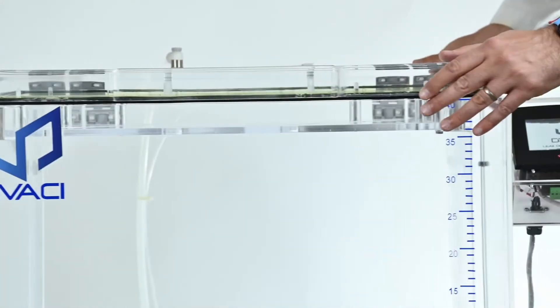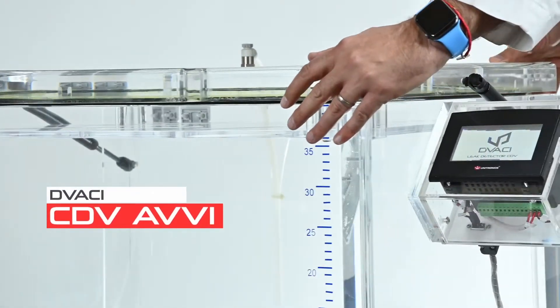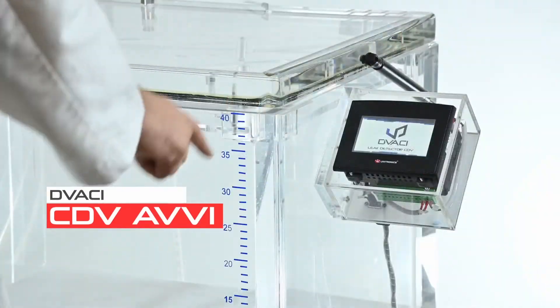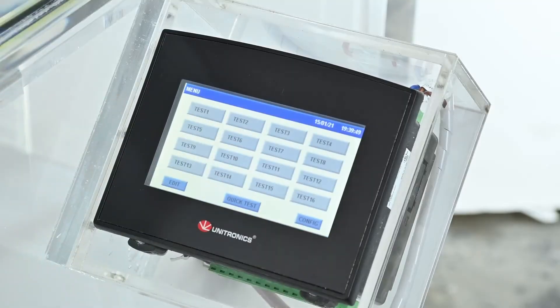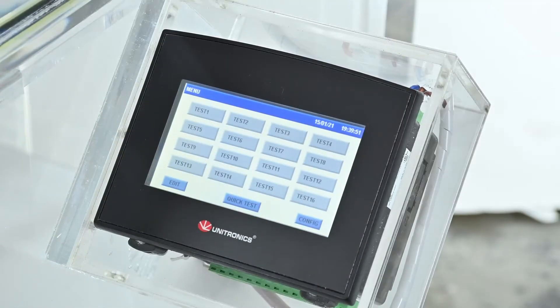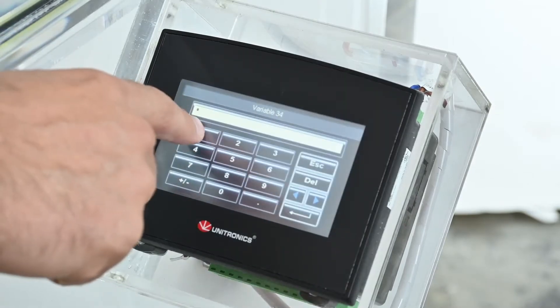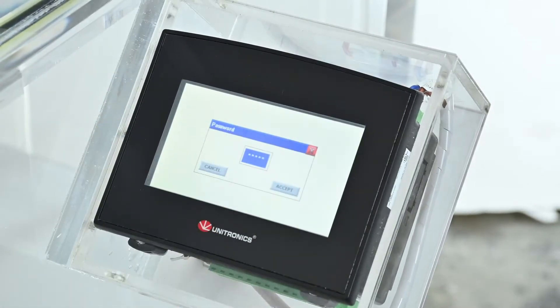The AVVI version of our CDV leak detectors is equipped with a 5-inch color touchscreen that makes the user's experience easy and intuitive. Access to the device system is password protected.